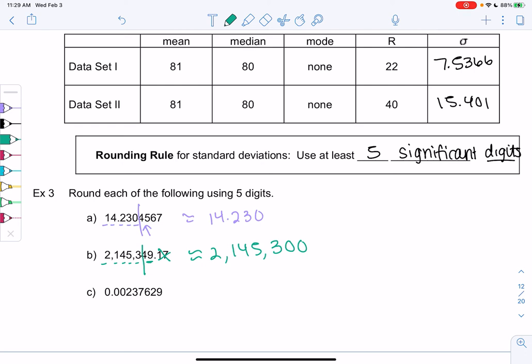And those zeros are considered not significant digits. If you're taking chemistry, you might have learned this. They're just there as placeholders, but the zeros themselves don't really have any value.